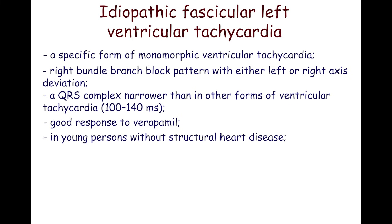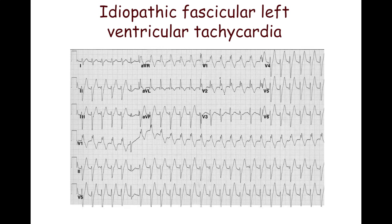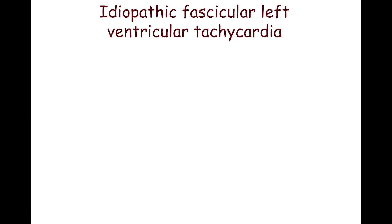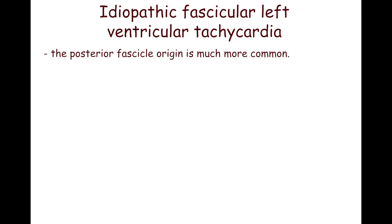It is a reentrant tachycardia originating from either the posterior fascicle, producing a morphology of right bundle branch block and left axis deviation, or the anterior fascicle, producing a morphology of right bundle branch block and right axis deviation. The posterior fascicle origin is much more common.